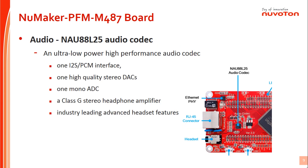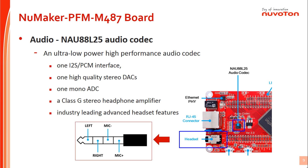The NuMaker PFM N487 features the Nuvoton NAU88L25 audio codec, which is an ultra-low-power, high-performance audio codec designed for headphone or headset applications. It includes one I2S PCM interface, one high-quality stereo DAC, one mono ADC, a Class-G stereo headphone amplifier, and industry-leading advanced headset features. The NAU88L25 connects to the NuMaker PFM N487 via I2C bus for control, with a default I2C address of 0x1A, and via I2S for audio digital data. The definition of the headset connector is also shown.